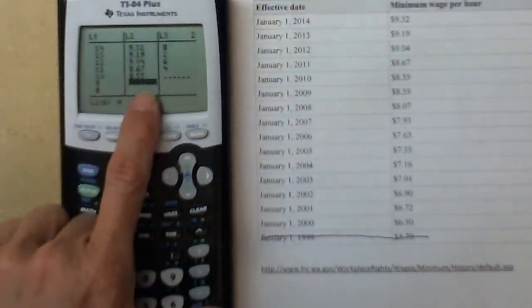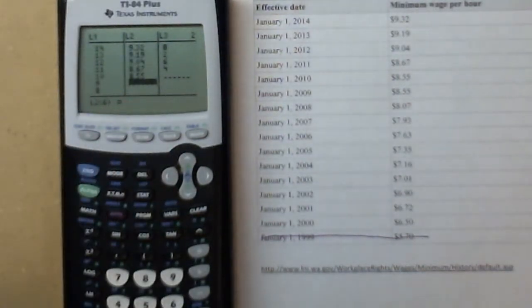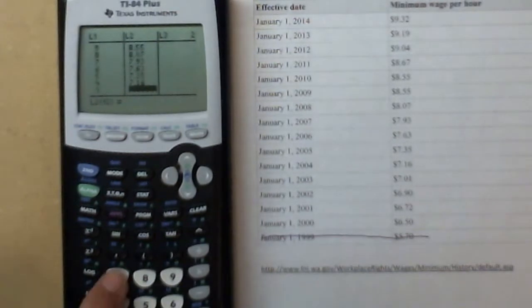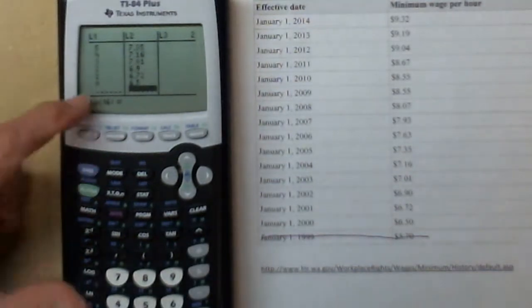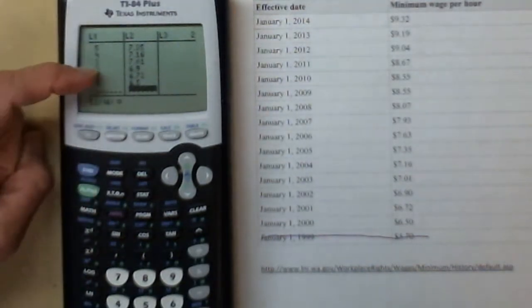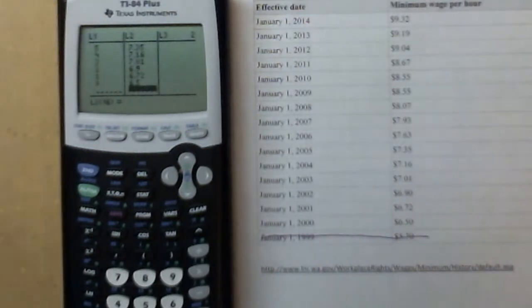2009 is 8.55 and 8.07 and 7.93 and 7.63 and 7.35 and 7.16, 7.01, 6.90, 6.72, and 6.50. And we lined up. If you're right, they leave off the trailing zeros, which I should have done when I was inputting, but I was on a roll. Now all of my data is input.